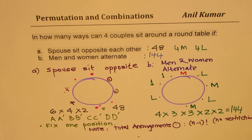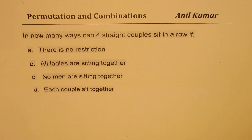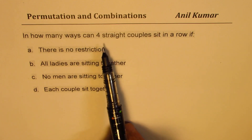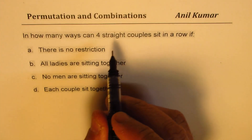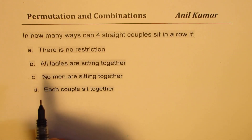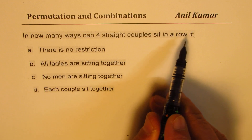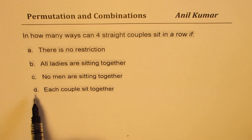That is how we solve questions about arrangements when persons sit around a round table. The important point is that we always fix one position and then look at others relatively — that gives the right solution. Now the question is: in how many ways can 4 couples — husbands and wives — sit in a straight row? We have 8 people in all and need to answer 4 questions.